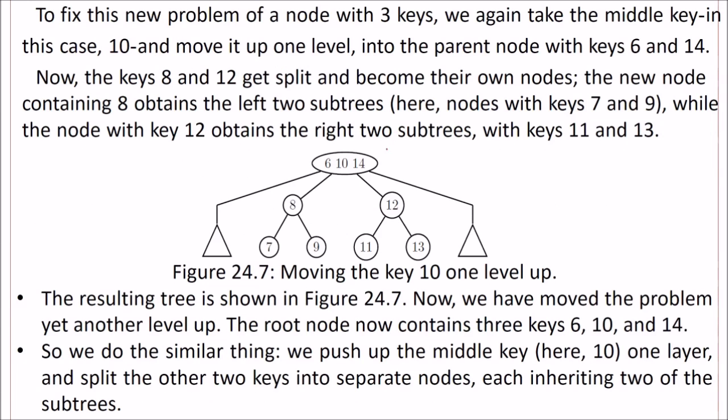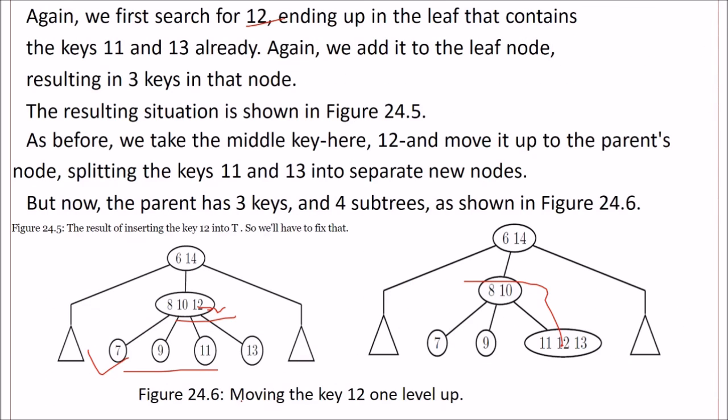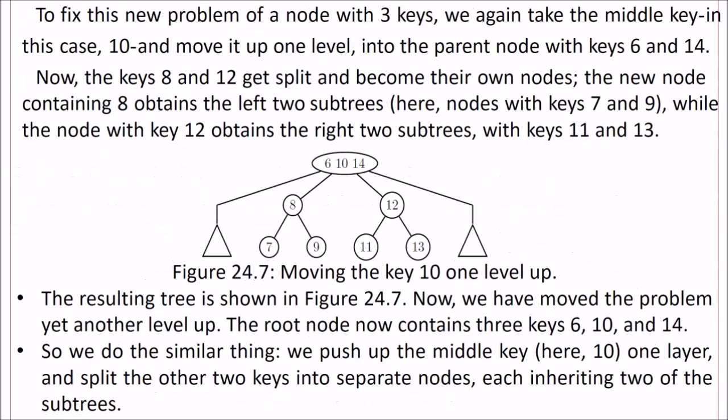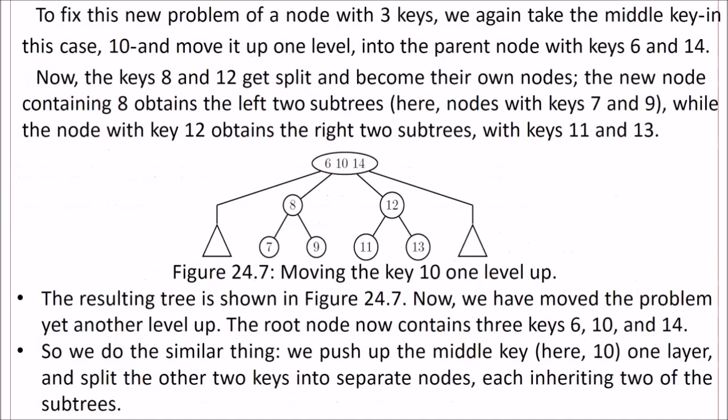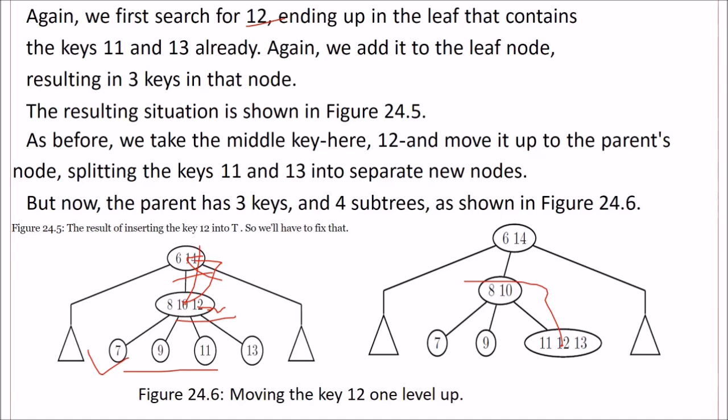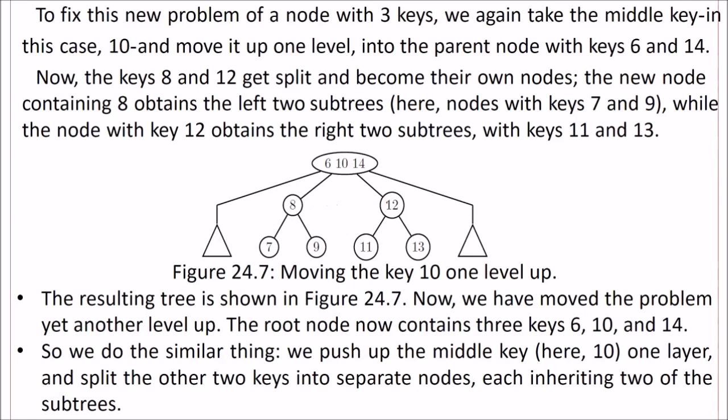But now the parent has three keys: 6, 10, and 14. We have to fix this problem. We again take the middle key, in this case 10, and send it to the parent node, which already contains 6 and 14. The node will contain 6, 10, and 14. Since 8 and 12 were there and 10 has gone, 8 will be one node and 12 will be another node, with 7 and 9 kept here, and 11 and 13 remaining here.